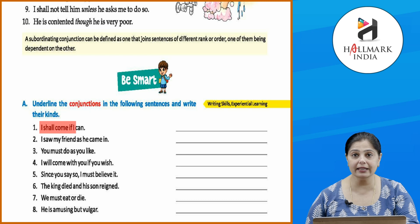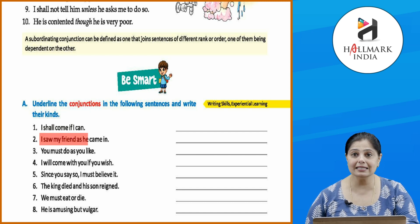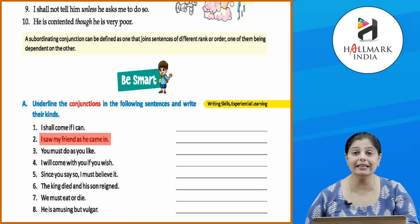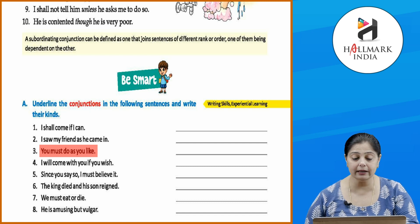'I shall come if I can' — 'if' becomes a subordinating conjunction. 'I saw my friend as he came in' — 'as' becomes a coordinating conjunction. 'You must do as you like' — again, 'as' is a coordinating conjunction. Quickly do the remaining ones by yourself.